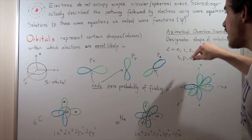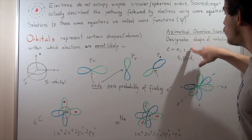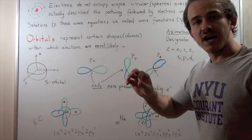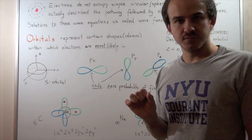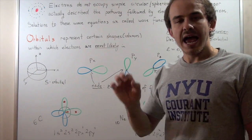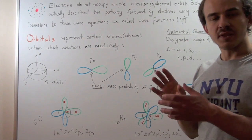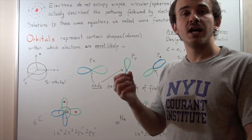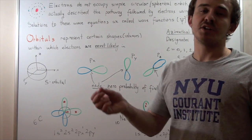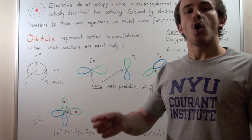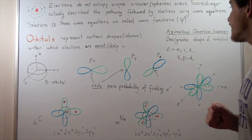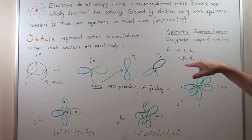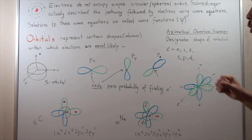The third quantum number specifies exactly which orbital the electron is in. The fourth quantum number gives the electron spin — we could have either a plus one-half spin or a minus one-half spin. In this lecture, we're only going to deal with the S or the P orbital.